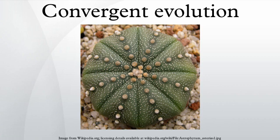Convergent evolution is similar to, but distinguishable from, the phenomena of parallel evolution. Parallel evolution occurs when two independent but similar species evolve in the same direction and thus independently acquire similar characteristics. For instance, gliding frogs have evolved in parallel from multiple types of tree frog. In morphology, analogous traits will often arise where different species live in similar ways and/or similar environments, and so face the same environmental factors. When occupying similar ecological niches, similar problems lead to similar solutions.